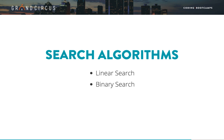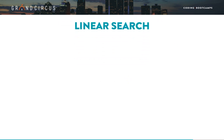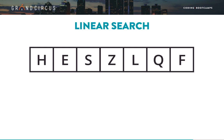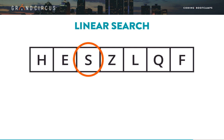Searching for a specific value within an array is a very common task — so common, in fact, that our programming languages have it built in with such methods as indexOf and find. But how does it work? And what about those cases where we have to write it ourselves? The basic approach to searching an array is called linear search. We start at one end of the array and check each value one by one until we find what we're looking for.